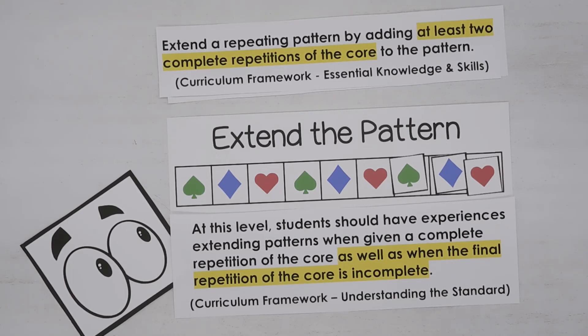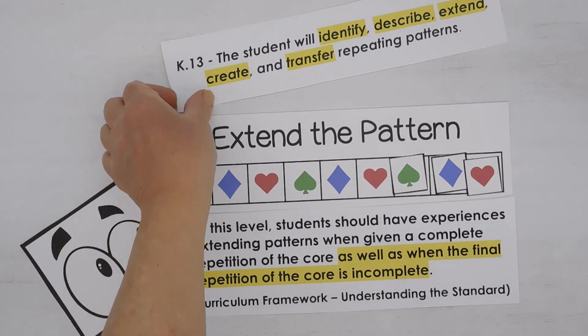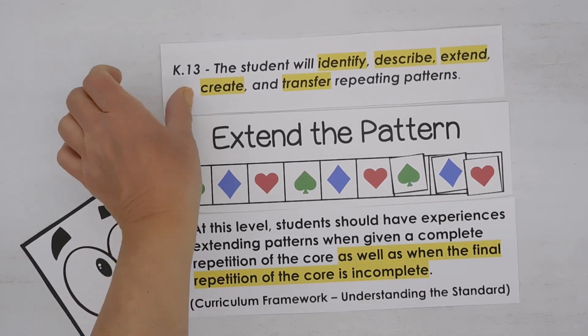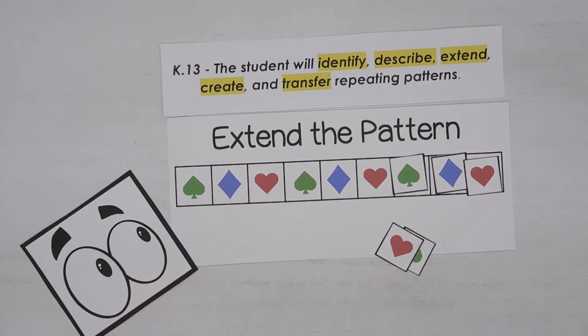It's important to look at the curriculum framework to understand what is really involved in the objective. Now, if we go back and we look at our standard, we could say that this activity partially meets it. It meets the component of extending a pattern. It's not identifying, describing, creating, or transferring a pattern. It is extending it, sort of, but it's not extending it enough. And it's not including a component where the repetition is incomplete.